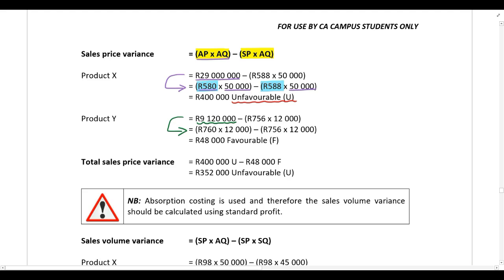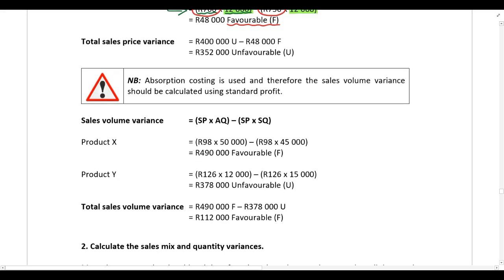For Product Y, the total actual price multiplied by actual quantity is 9.12 million rand. With an actual quantity of 12,000 units, the actual selling price per unit must have been 760 rand. Because the actual selling price is higher than the standard selling price, this variance is favorable.